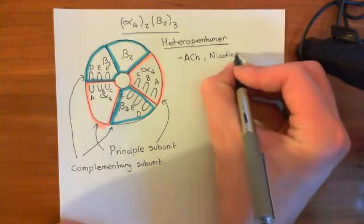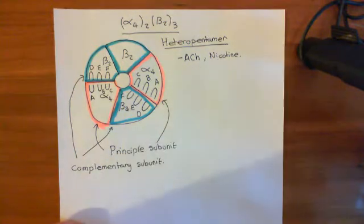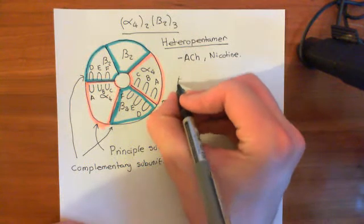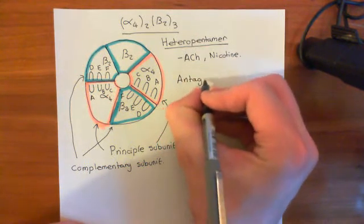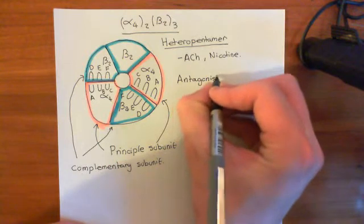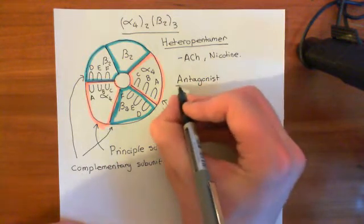However, we think the alpha-7-5-homopentamer is more important in the addictive properties of nicotine than the alpha-4-2-beta-2-3 form.